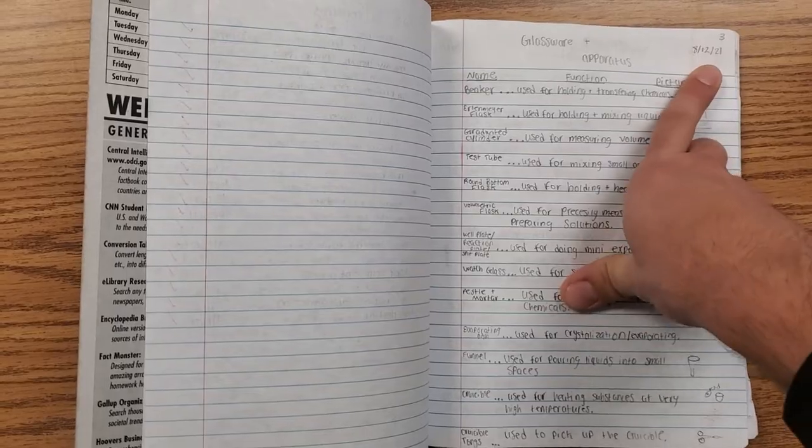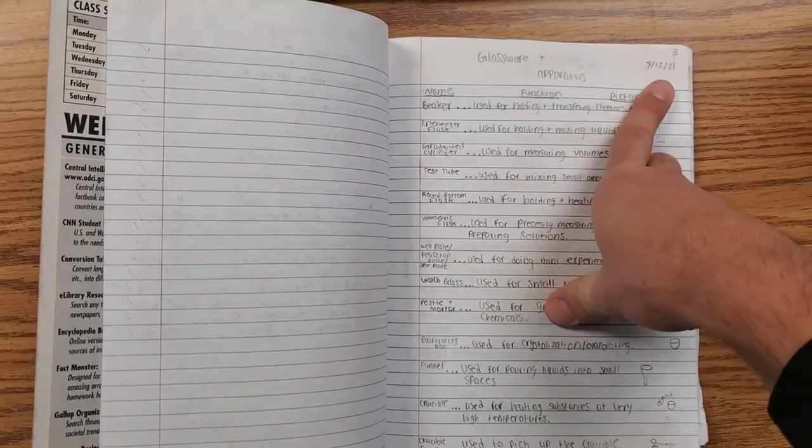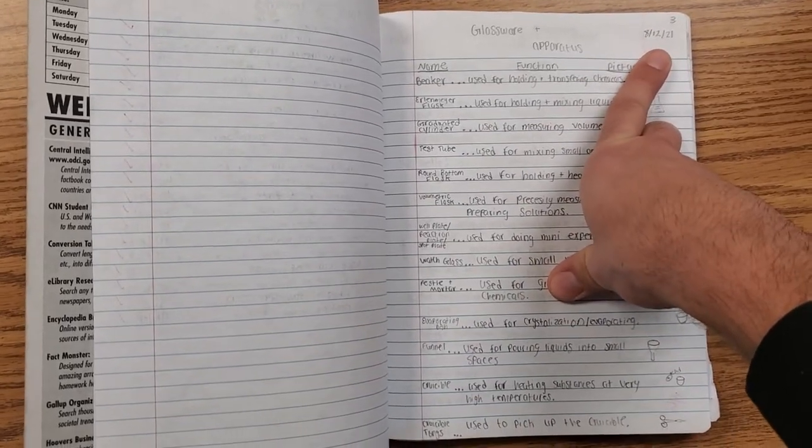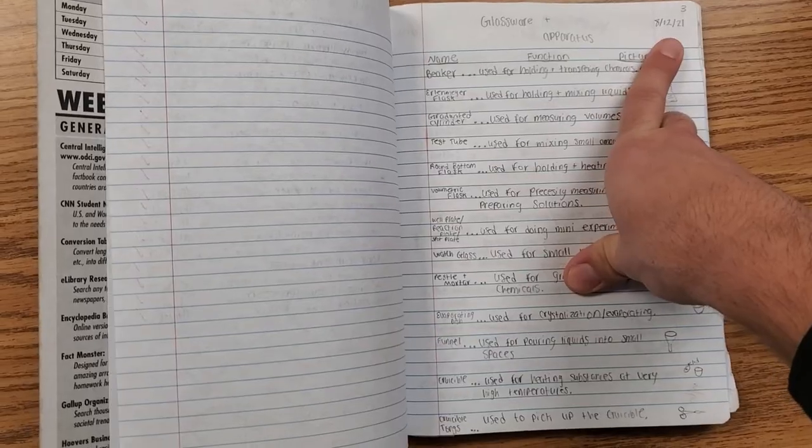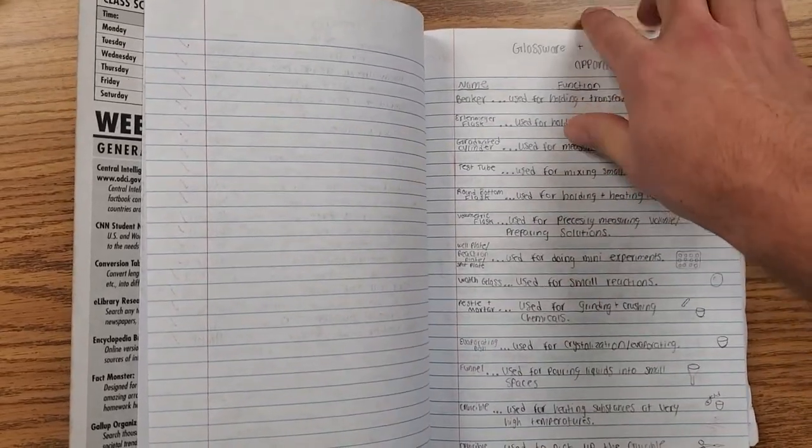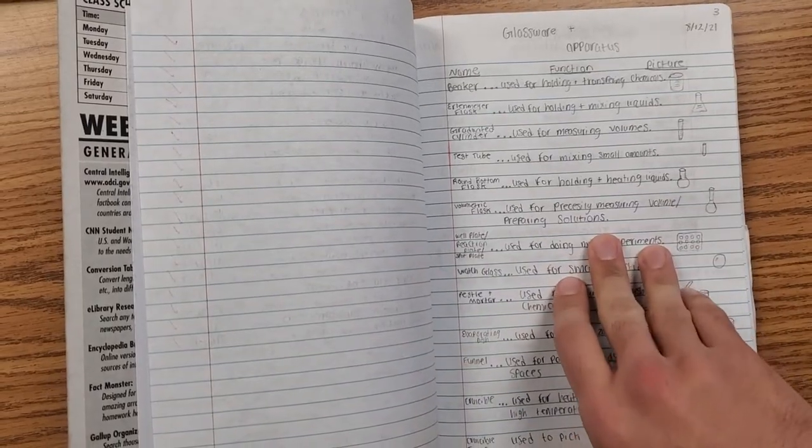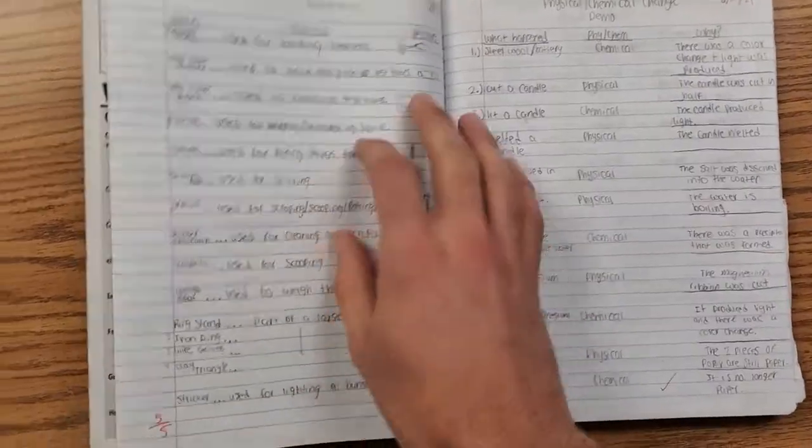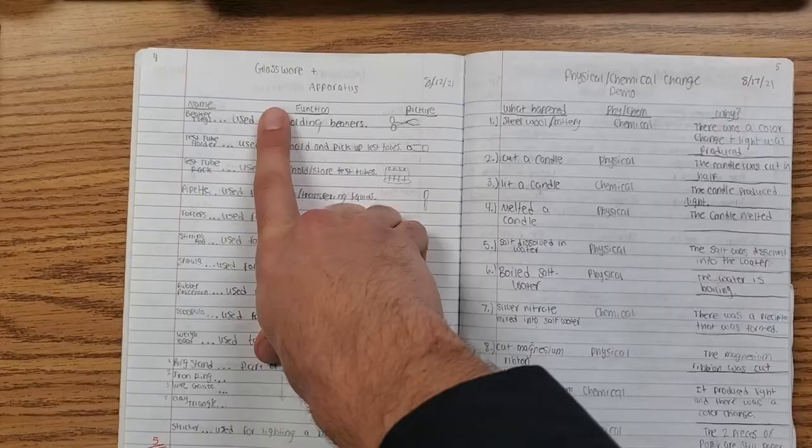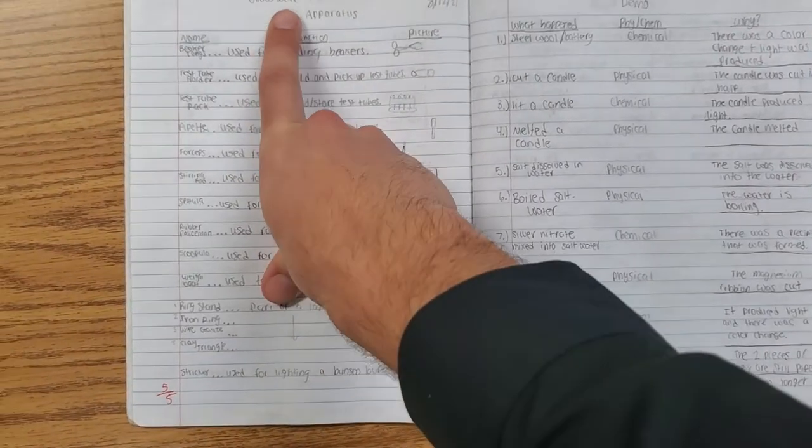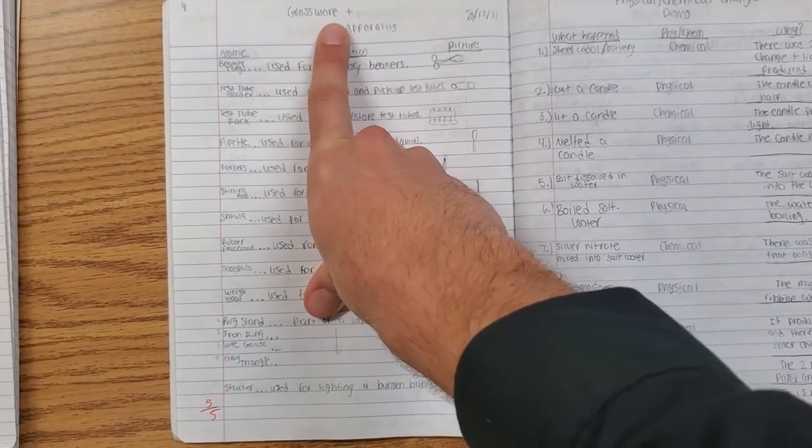And then the date. You might not know the date just yet, but the date always goes on every single page. So top right underneath the page number, or it looks like this one went on several pages. Notice they used the left-hand side, which is fine, but you need the title here—'Glassware and Apparatus.'